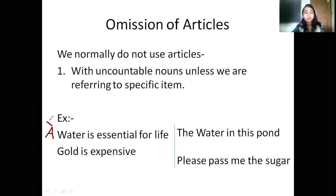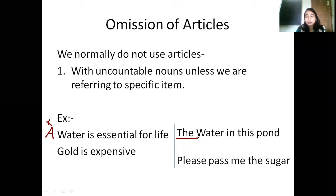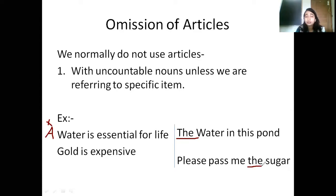It is wrong to use articles here — no articles will come. But if I am talking about a specific item, for example the water in this pond, then it becomes 'the water in this pond.' When I am talking about specific things, I will write the article. Similarly, 'please pass me the sugar' — I am specifying that sugar, so I use 'the.' This is the first rule where we do not use articles.